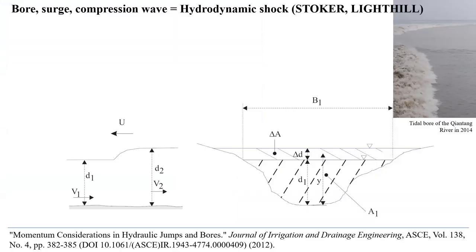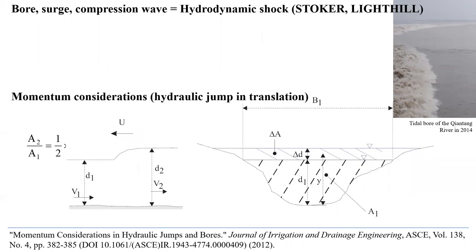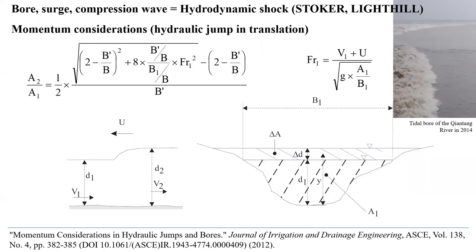A compression wave, a surge, a bore is a major hydrodynamic shock. It is a hydraulic jump in translation. It is not a periodic wave; it is not a soliton. I encourage everyone to read the seminal discussion by Stoker and Lighthill in their classical texts, 'Water Waves' and 'Waves in Fluids.' One may analyze a positive surge using a system of reference in translation with the surge, by applying the equations of conservation of mass and momentum in integral form. These lead to relationships between the flow conditions upstream and downstream of the surge as a function of the Froude number. The expression in front of you is very general and valid for any cross-sectional shape.